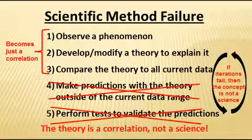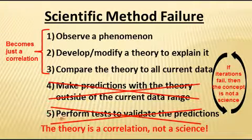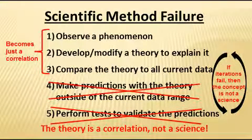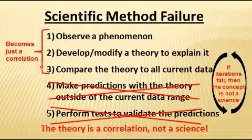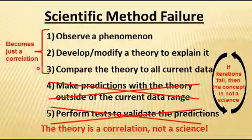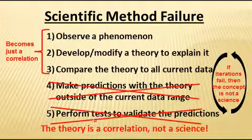The scientific method can fail when all of the information cannot be reconciled — when predictions you make are repeatedly proved untrue no matter how many iterations you run. Then we don't call that a science; we call it a correlation. If steps one through three work out but steps four and five never do, the theory is known as a correlation, not a science.